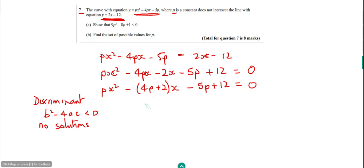So what we're going to do is look at the discriminant for this as it's written. So we can say, well, B is minus 4P plus 2, and C is minus 5P plus 12. So I'm being very careful with the signs on this. And so A also is equal to P.